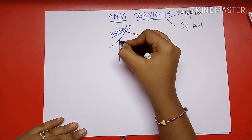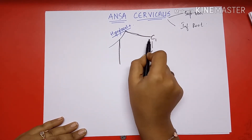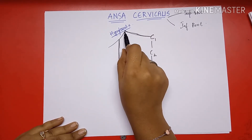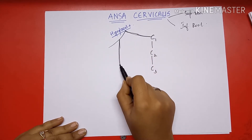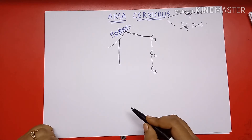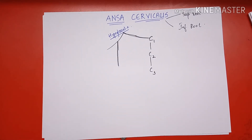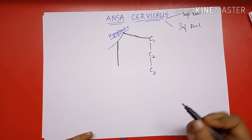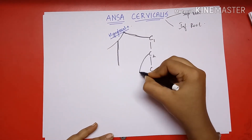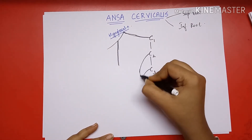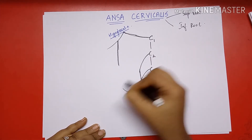So the branch of C1 joins the hypoglossal nerve, and through the hypoglossal nerve, the descending branch forms the superior root of ansa cervicalis. Now, for the formation of the inferior root: the inferior root is formed separately from C2 and C3 — C2 and C3 join together to form the inferior root.